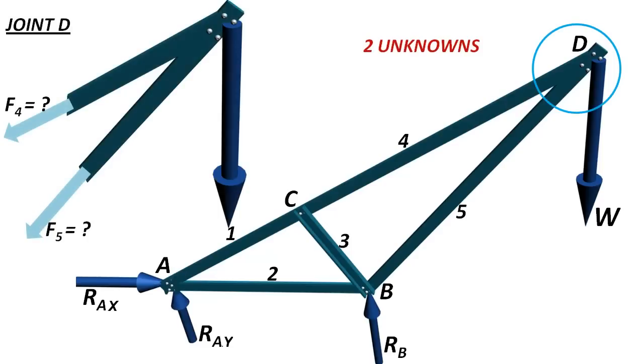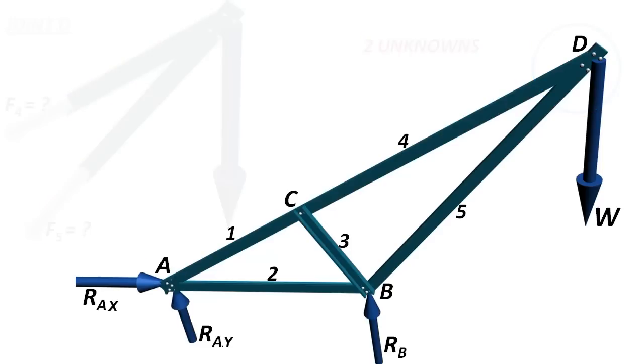It's clear that we could start our analysis either from joint A or from joint D. Both are having two unknowns. Other joints are having three unknown forces.